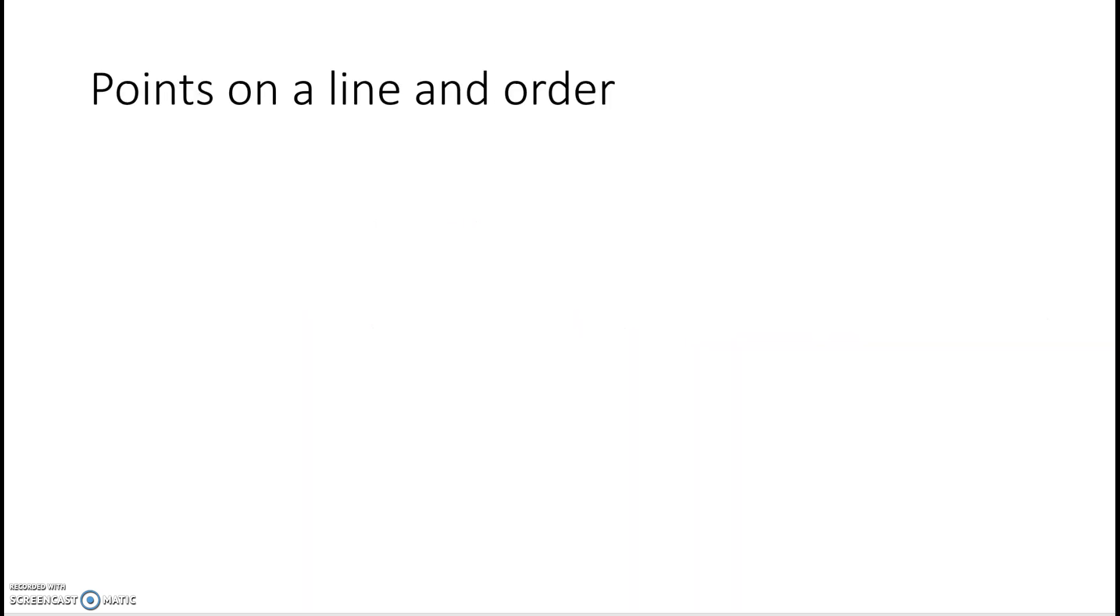The natural numbers can be represented on a number line and normally you would space them equally. Start at 0 and so on. And the natural numbers are in order. They start with zero and they progress from small to large. As we move along the line from left to right, the numbers increase and we indicate that by the arrow.